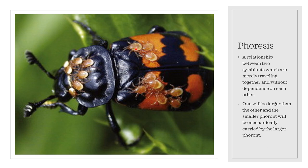The mite is the smaller phoront, and the beetle is the other phoront. The mites are located on the head and the body of the beetle, and the mites feed on nematodes in the beetle's nest chamber. Their relationship is considered to be phoretic because they are just merely traveling with each other and do not depend on each other biochemically or physiologically.